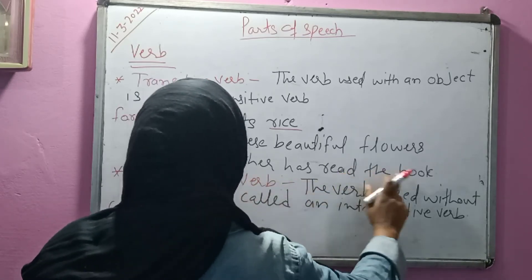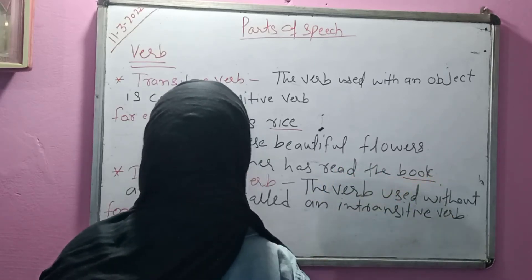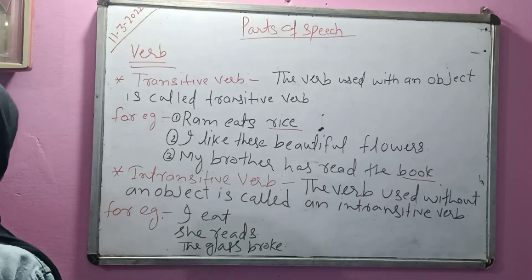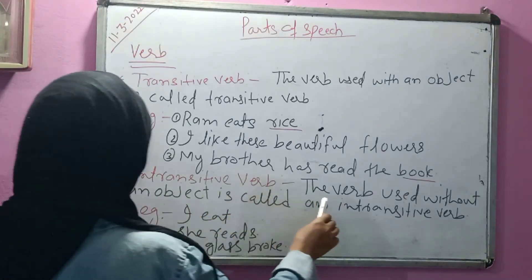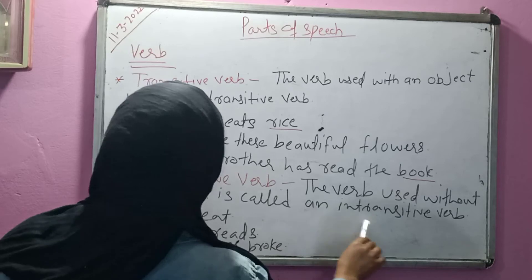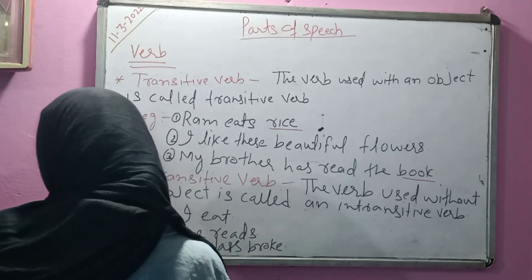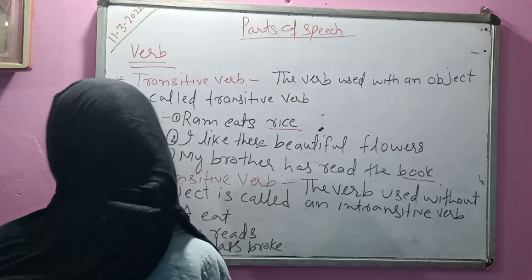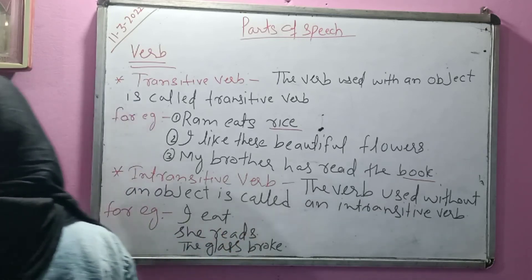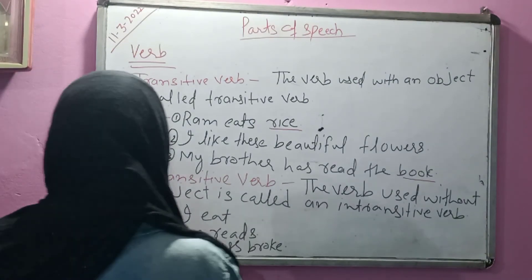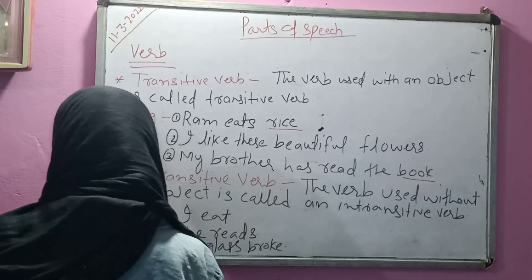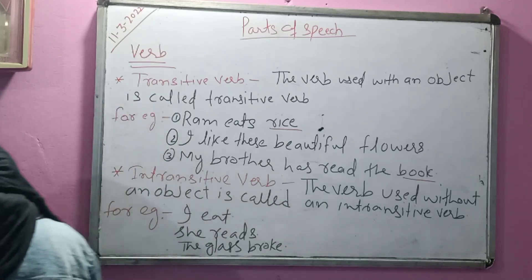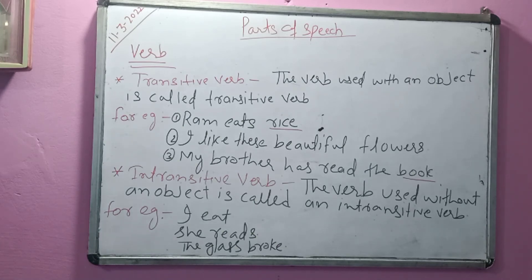Now, intransitive verbs — these are words used without an object. For example: 'The glass broke.' There is no object here. That is intransitive. I hope you will understand.